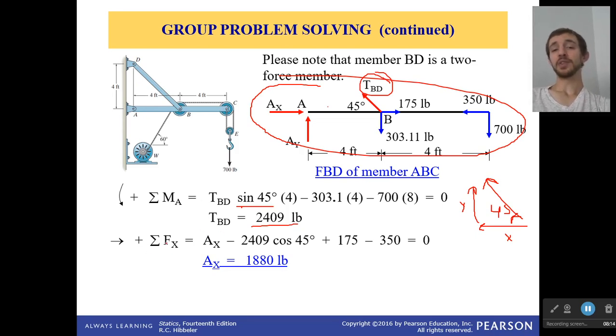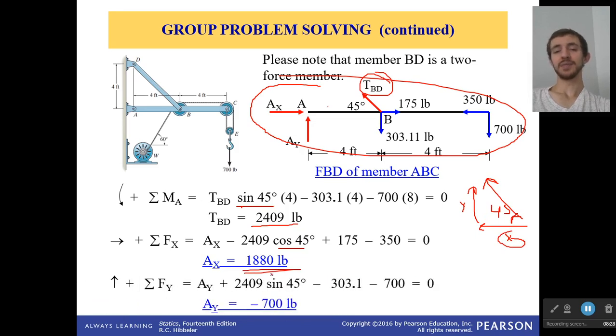And then we have to sum the forces in the X direction, so we get Ax. Once again we have the opposite component. We had sine before, but now we're having the cosine component because that's adjacent over hypotenuse. And we get that Ax is 1880. And bring back our Y component to solve for Ay, which is negative 700. Okay, so with that we have solved everything. We've got all of our forces done and this problem is done.